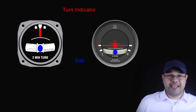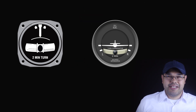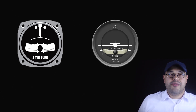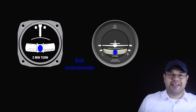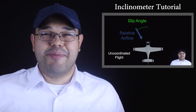Both the turn and slip indicator and the turn coordinator consist of a turn indicator and a ball. The turn indicator indicates direction and rate of turn, and the ball indicates coordination. Strictly speaking, the turn indicator and the ball are separate instruments, although they are usually located together on the same instrument face. The turn indicator is either a needle or a schematic aircraft, and the slip indicator is the ball — formally referred to as the inclinometer. It's not a gyroscopic instrument, but works based on the balance of forces that occur as the aircraft maneuvers. We have a separate video covering the inclinometer, so be sure to check that out.